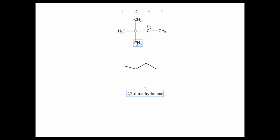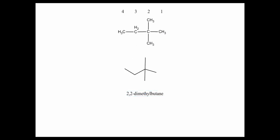You could count the carbons in either direction — one, two, three, four — and those two methyl groups would serve as the branches either way. Looking at the line-angle diagram gives you a clearer view of those options.